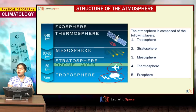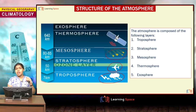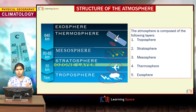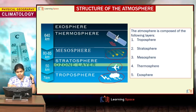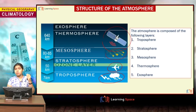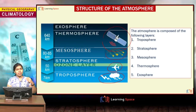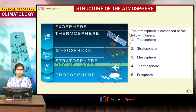Then comes the layer of mesosphere, where meteoroids get burned upon entering the Earth's atmosphere. Then there is the thermosphere, where the international space shuttles orbit around the Earth. The fifth and last layer is the exosphere — this is where the Earth's atmosphere merges into outer space.